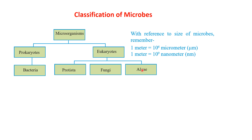This flowchart you also have to copy down in classwork. With reference to the size of microbes: 1 meter is equal to 10 to the power 6 micrometers, and 1 meter is equal to 10 to the power 9 nanometers.